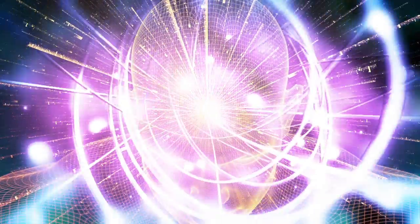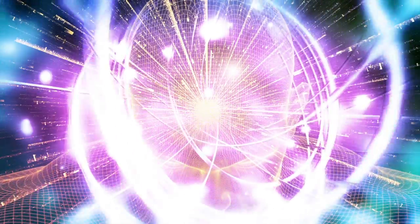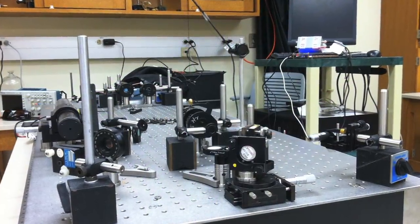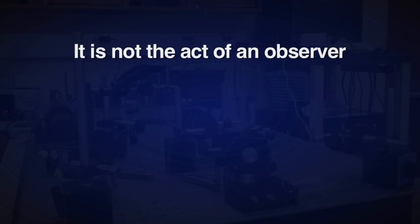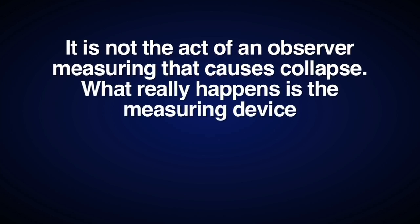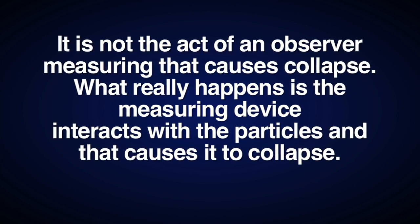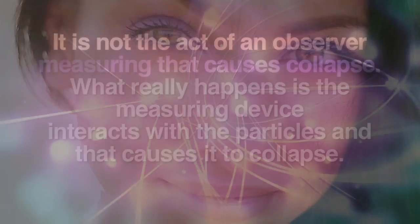One of the biggest objections to the view that a conscious observer is necessary to collapse a wave function is that collapse is really only caused because of interaction with a measuring device. In other words, it is not the act of an observer measuring that causes collapse. What really happens is the measuring device interacts with the particle and causes it to collapse. The conscious observer has nothing to do with this.